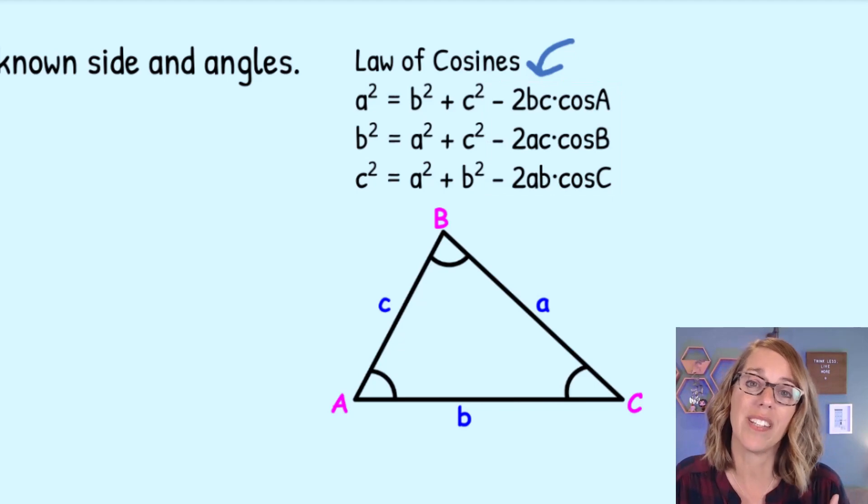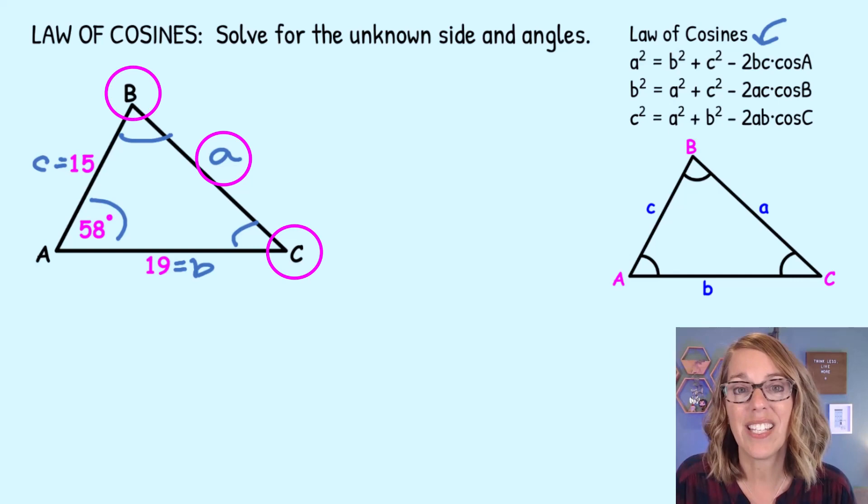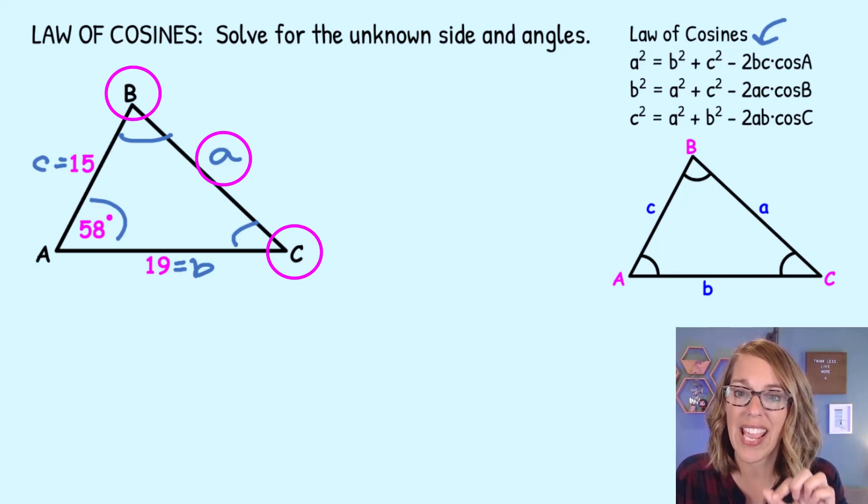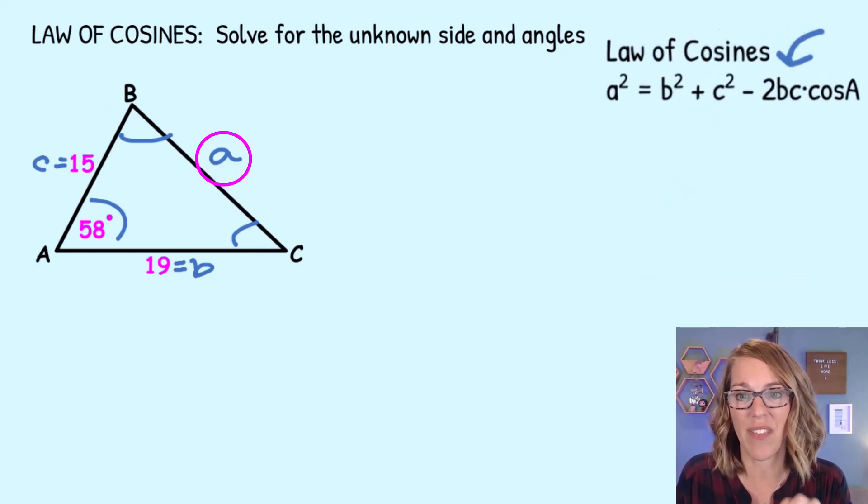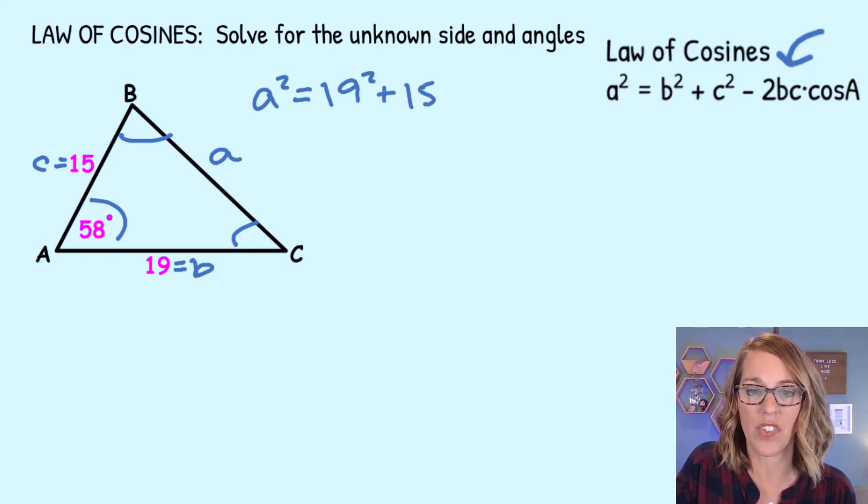Now for ours, we need to solve for side A, angle B, and angle C. So the easiest one to use is going to be the one that starts with A squared, and that's going to solve A for us. So we have A squared is equal to B squared, but side B is 19, so B squared plus C squared, which is 15, minus, I'm going to put this just right below.